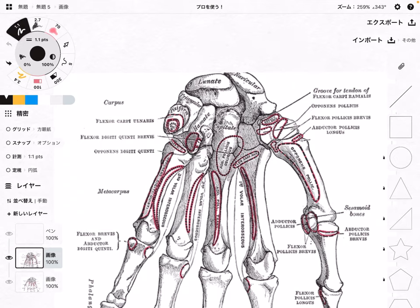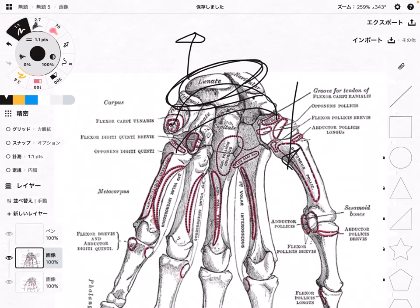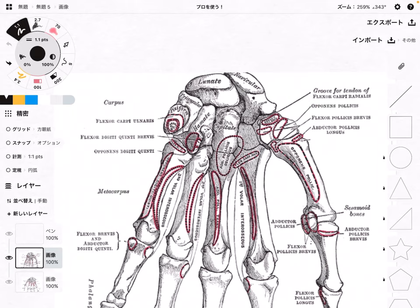There are mainly four bones on the proximal side, close to the elbow, and there are four bones on the distal side, close to the finger side. I'm going to explain the proximal side first, then the distal part, starting from the thumb side.